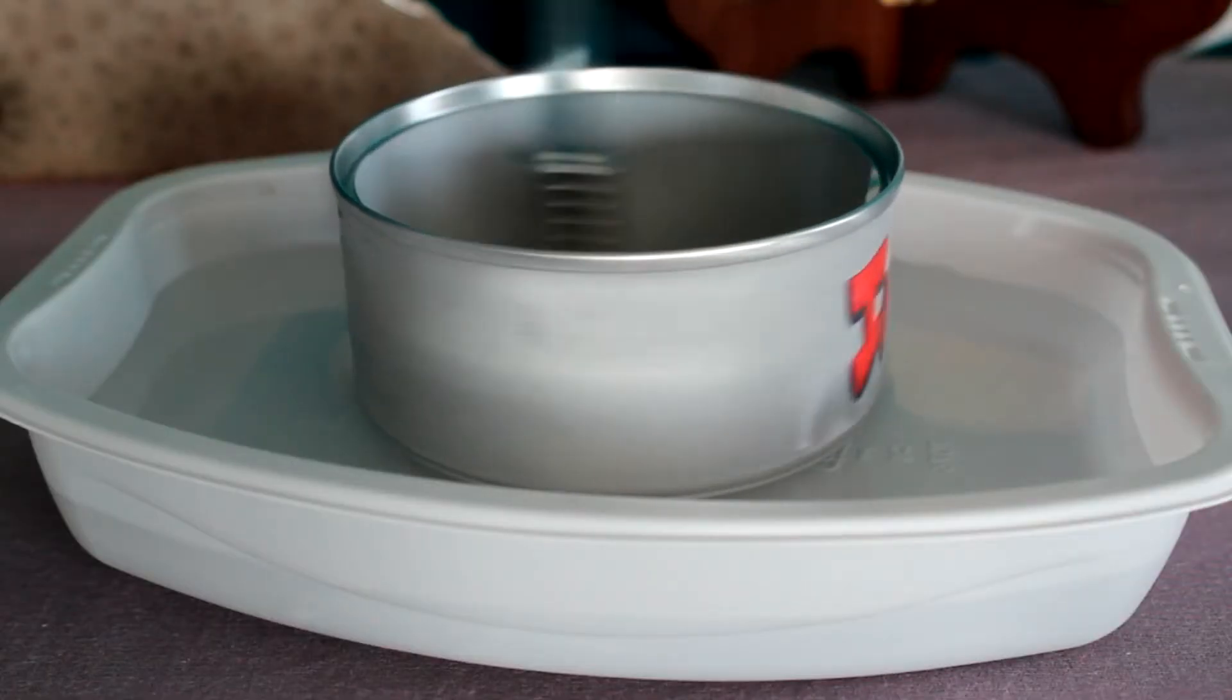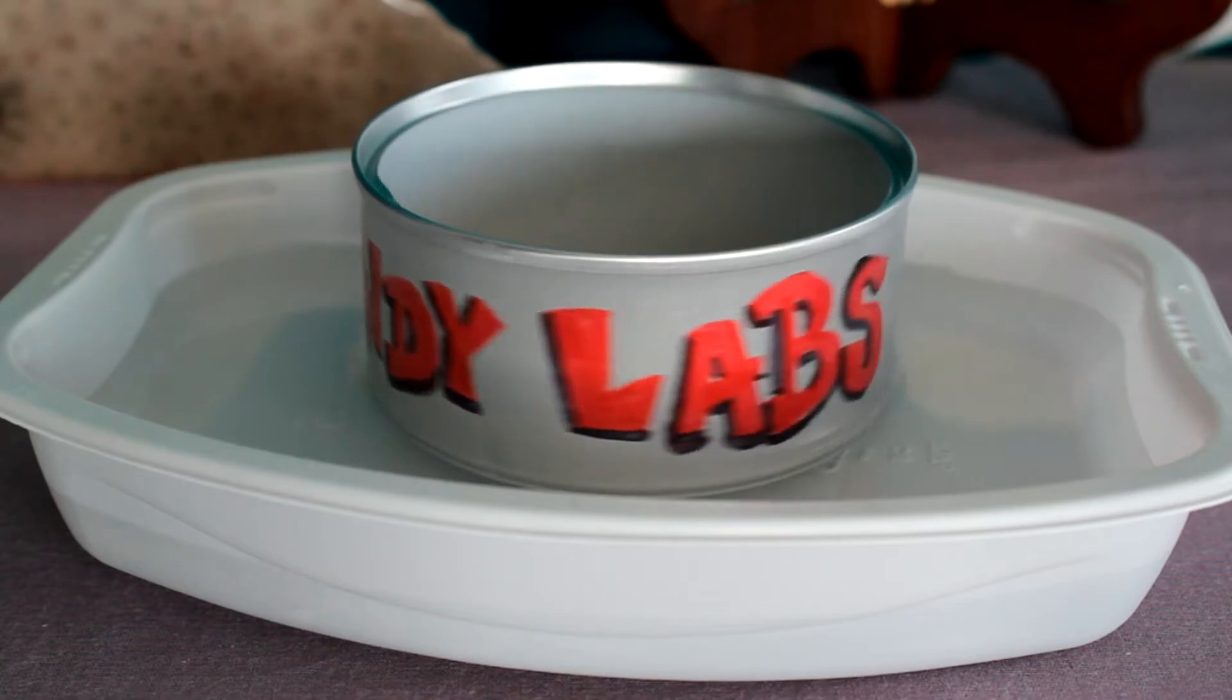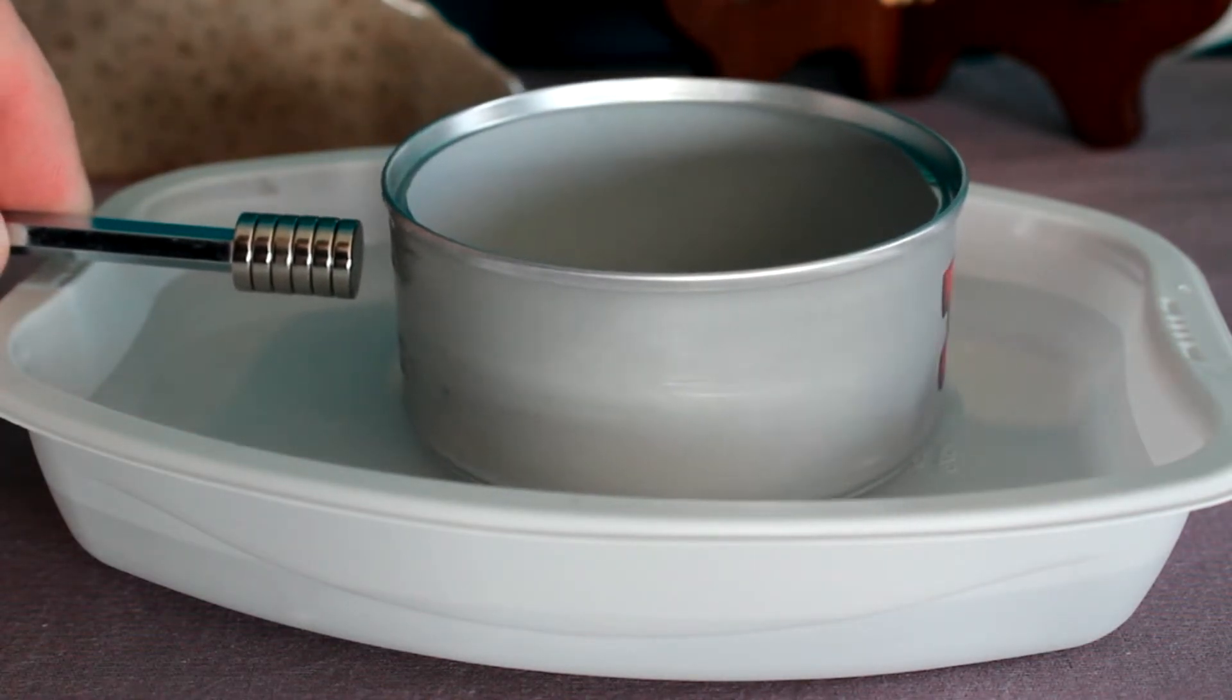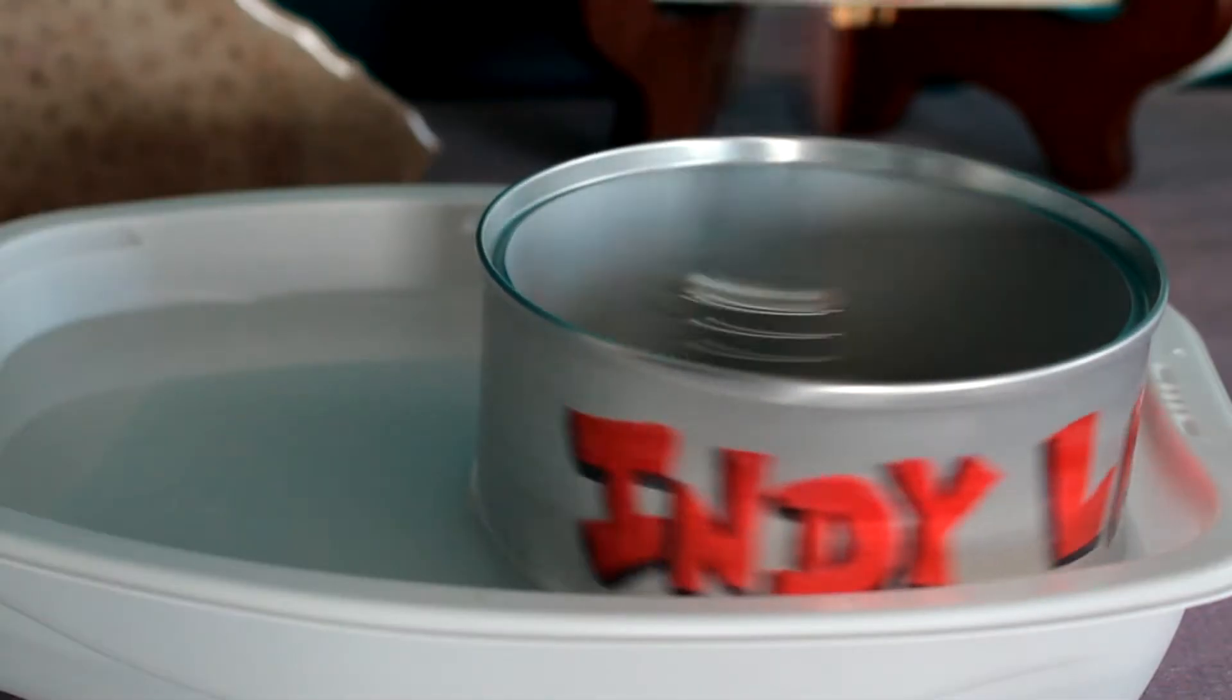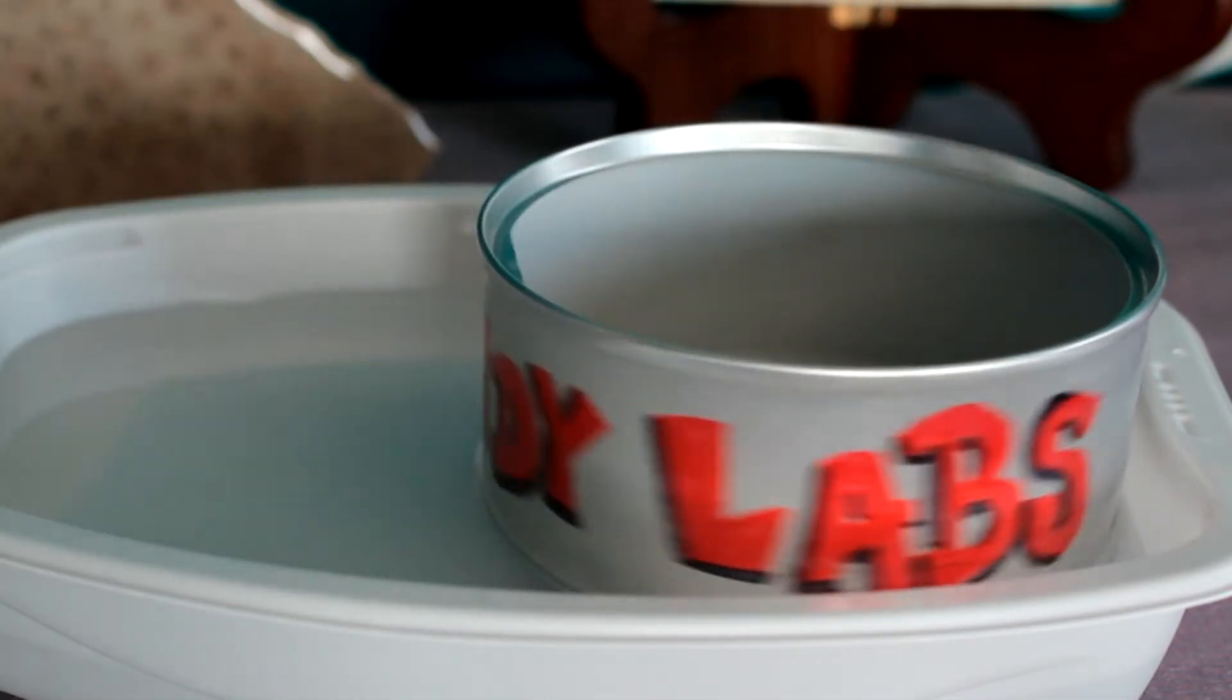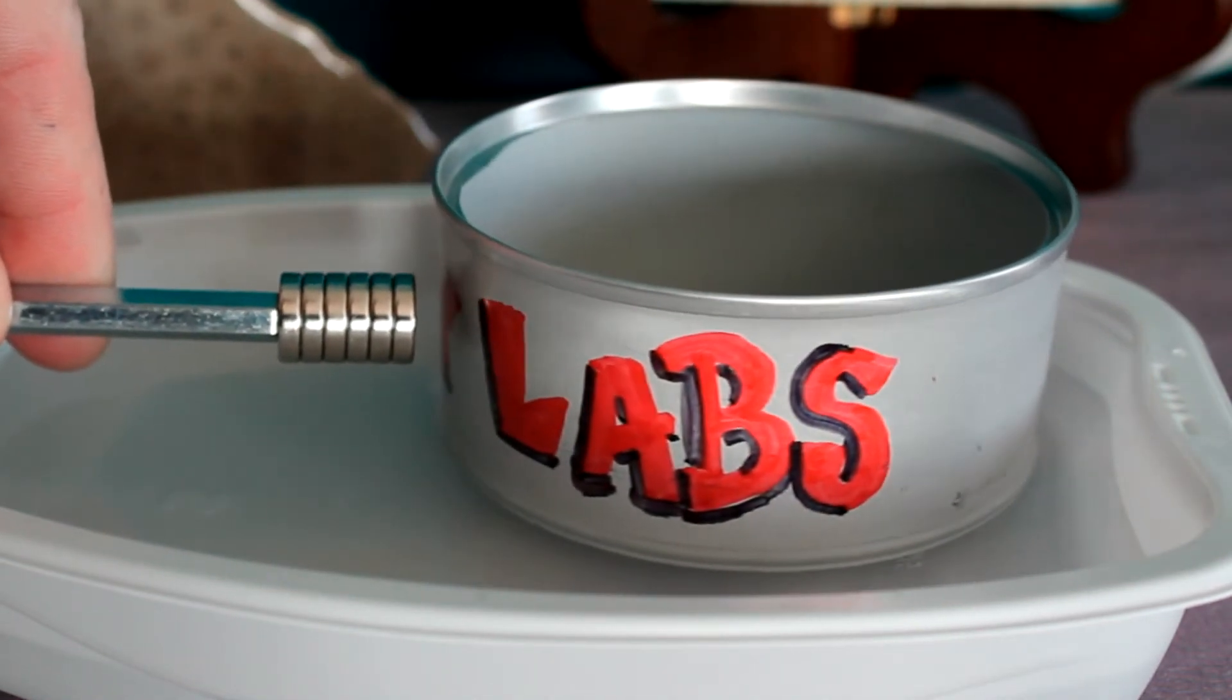And another thing that we can do to observe and verify Lenz's Law is to use our magnets as a type of braking system. Once you've got your can going, have your magnets become stationary, not moving. You can see that as the can slows down and comes to a stop, an opposed magnetic field is being generated. This time though, the opposed field isn't being generated by the movement of the magnets, but by the movement of the conductor.